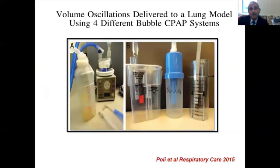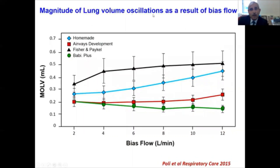The next question is: are all bubble CPAP devices created the same way? Polly and colleagues recently reported a study comparing volume oscillations delivered to a lung model using four different CPAP systems: the homemade system, the Fisher-Pecal system, the Babi Plus system, and the Airway Development system. They looked at the magnitude of lung volume oscillations as a result of bias flow. The Fisher-Pecal system, shown here in black, provided the greatest magnitude of lung volume oscillation compared to any other device. At all bias flows, the magnitude of oscillation increased at flows above 4 L/min in three systems: Fisher-Pecal, homemade, and Airway Development.